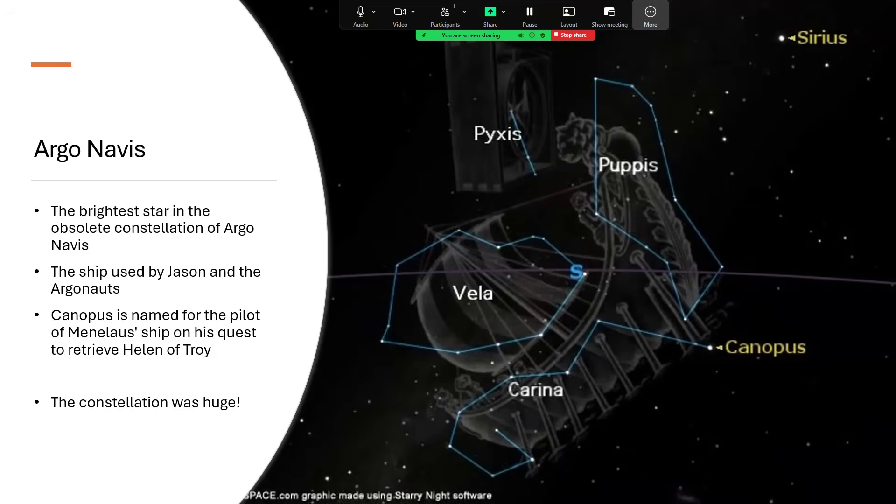Originally, it was the brightest star in the constellation of Argo Navis, which represented the ship Argo, used by Jason and the Argonauts, and was a truly vast constellation covering a huge area of the sky.